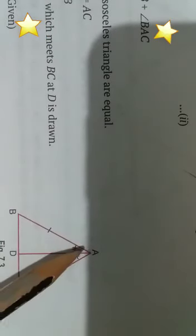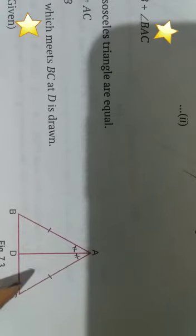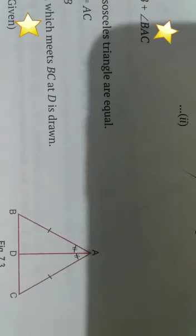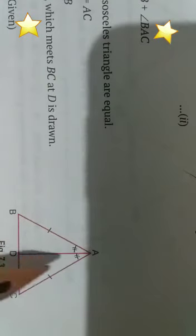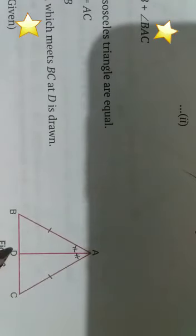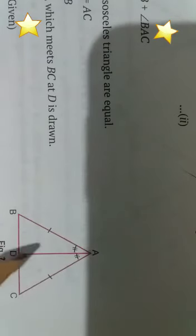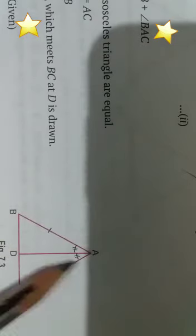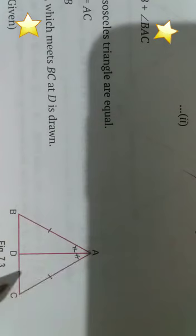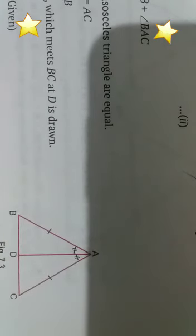Let triangle ABC be an isosceles triangle. Then AB equals AC, and we have to prove that angle ABC equals angle ACB. For the construction, we draw the bisector AD of angle A meeting BC at D. In triangles ABD and ACD, by SAS congruency, triangle ABD is congruent to triangle ACD, so angle ABD equals angle ACD and therefore angle ABC equals angle ACB.